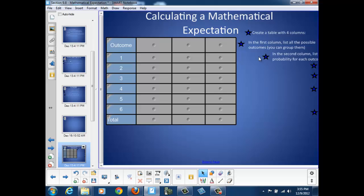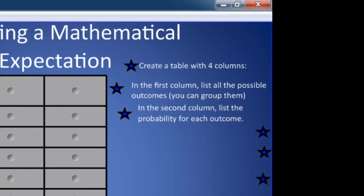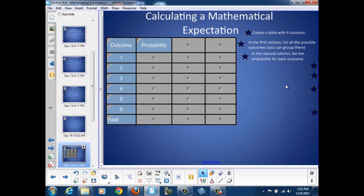Now, in the second column, we're going to list the probability for each outcome. So we list the probability. Now, we're going to assume it's a fair die, that this game isn't rigged. So the probability of rolling a 1 on a die would simply be 1 out of 6. The same for a 2, or a 3, or a 4, or a 5, or a 6.